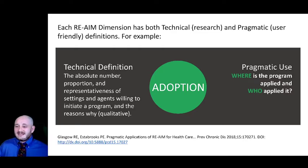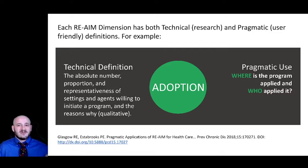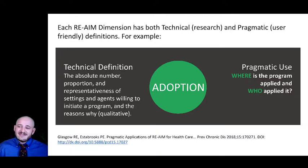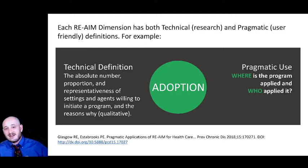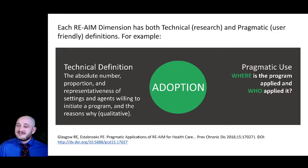We have resources on our website that go through each of the RE-AIM outcomes. With the technical definition, it shows the way you would present that measure. For adoption, it shows that it's the proportion — the absolute number of those that could be reached — so your denominator is anybody eligible to adopt your intervention, and your numerator is the ones that actually adopt. We also emphasize collecting qualitative data from not just those that do adopt, but also from those who choose not to adopt your intervention. The pragmatic definition is: where is the program applied and who applied it? There are also citations at the bottom of slides to learn more.